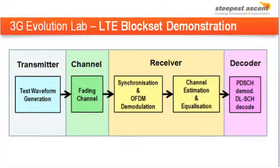This demonstration shows how we can use the LTE block set to analyse the performance of a receiver. First we will create a test waveform using the test mode generator, pass it through a fading channel, synchronise and demodulate the waveform, and equalise the received symbols using an estimate of the channel.